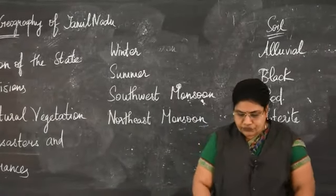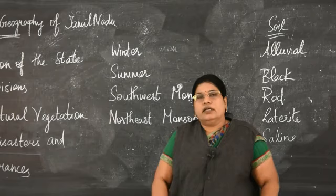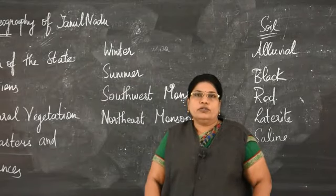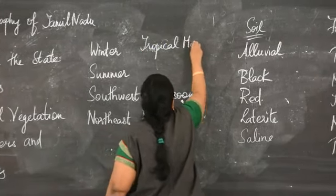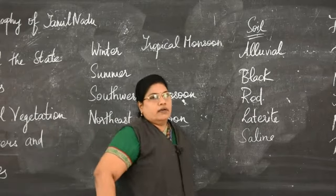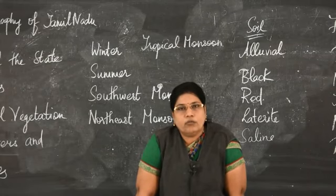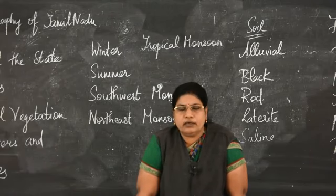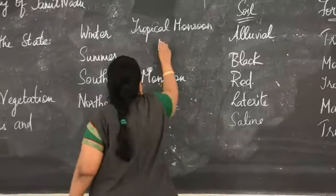India is situated in the tropics. Hence we experience tropical climate. And since we are getting rains from both the monsoons, India experiences tropical monsoon climate. The direct rays of the sun fall on India, hence India is quite hot throughout the year. Tamil Nadu has a very good coastline, so the coastal areas experience a maritime type of climate.